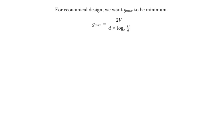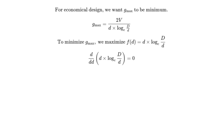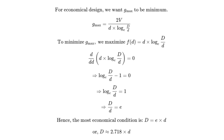We want the maximum stress Gmax to be minimum for economical design. That means we need to minimize Gmax, or in other words, maximize d × log_e(D/d). So we differentiate it with respect to small d and set it to zero — a classic optimization move. Solving it step by step gives us: log_e(D/d) − 1 = 0, which means log_e(D/d) = 1. And when you take the anti-log, you get D/d = e, which is approximately 2.718.